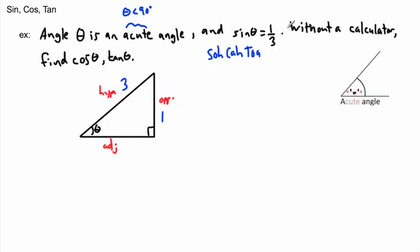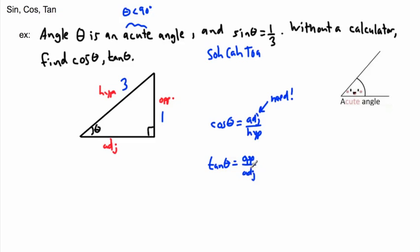I need to know what the adjacent is, because cosine is adjacent over hypotenuse, and tangent is opposite over adjacent — both require the adjacent side. So how do I find this length? Since it's a right angle triangle, I can use Pythagoras' theorem. To find adjacent, I'll use c² = a² + b².